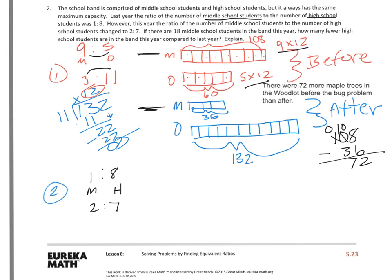That's going to mean that each unit is equal to the same amount. So if there are 18 middle school students in the band this year, how many fewer high school students are in the band this year compared to last?